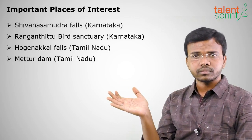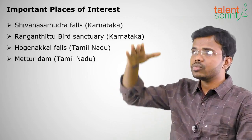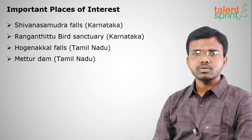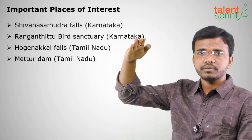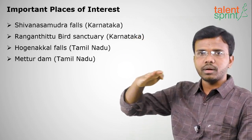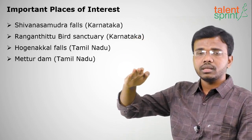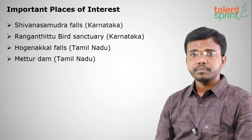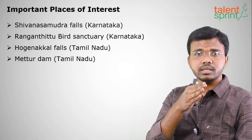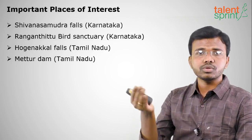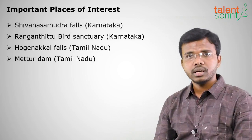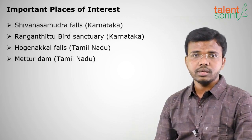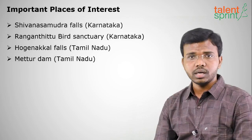Among other peninsular rivers, arranged from north to south, the order is: Subarnarekha, Baitarani, Brahmani, and Mahanadi. The Mahanadi originates from Bastar district in Chhattisgarh and flows through Odisha. The famous Hirakud Dam is built on the Mahanadi river.